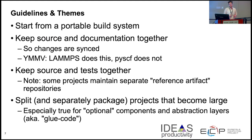Guidelines and themes with packaging: packaging is an additive process. You want to start from something that already has a portable build system. Makefiles usually aren't super portable, but CMakeLists and automake are ways to generate makefiles that look at the environment of the machine you're compiling on, giving you a portable build system that translates between machines more easily. Keep your source and documentation together, because you tend to make modifications to both at the same time. Also keep your source and tests together so you're able to update those at the same time.